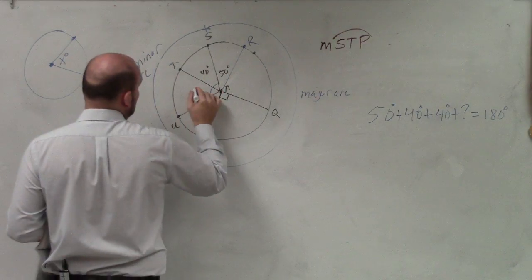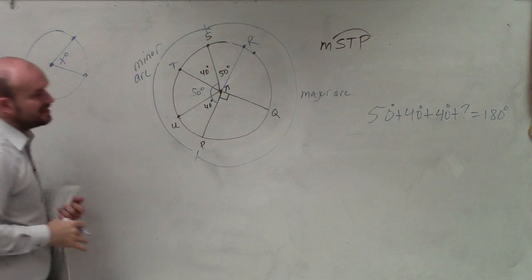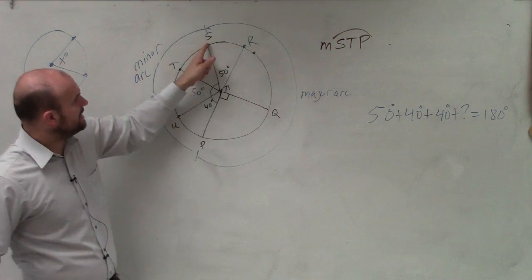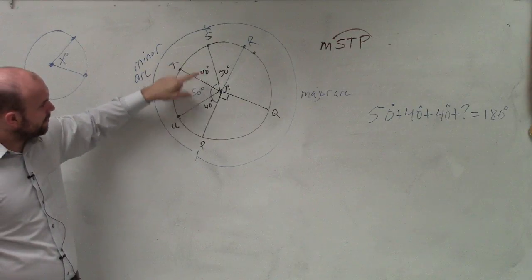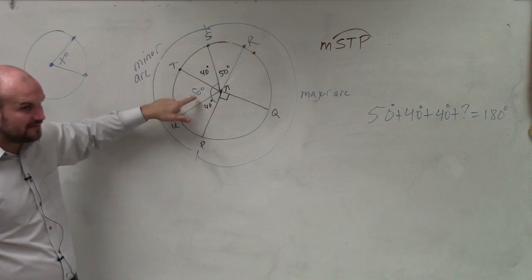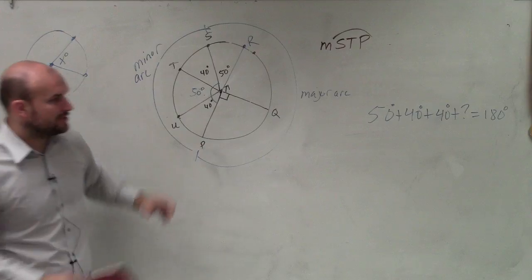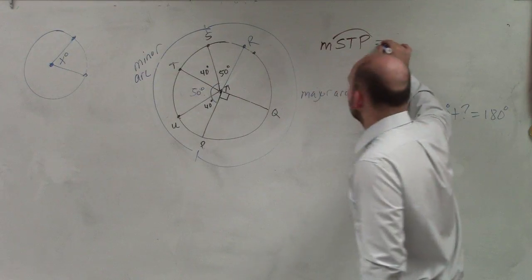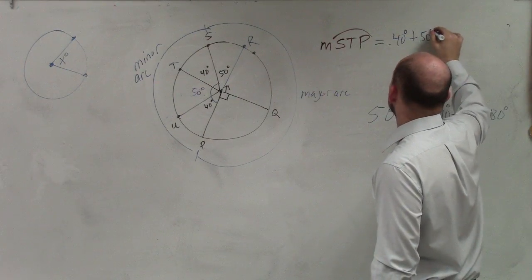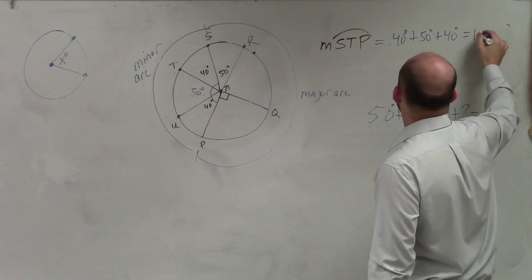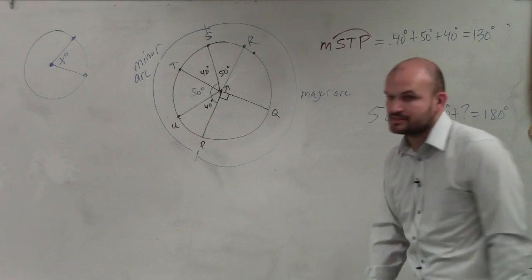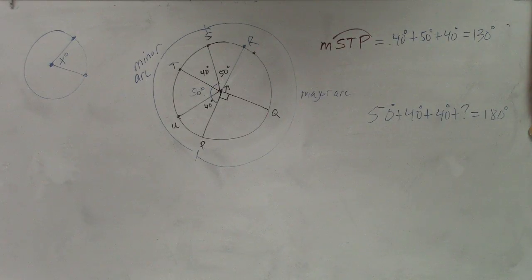So therefore, this angle is 50 degrees. But remember, STP is only the measurement from S to T to P. So it's only going to be 40 plus 40 plus 50, which equals 130. So the measurement of my minor arc is 130 degrees.